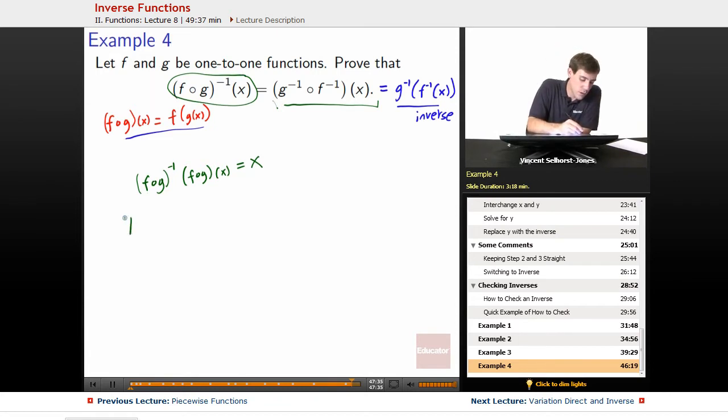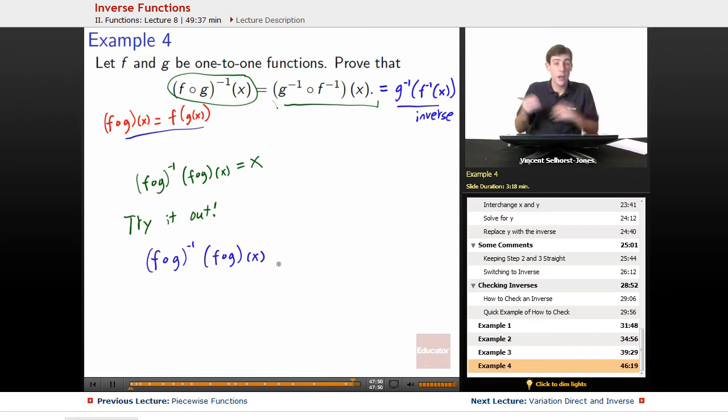So we'll set it up like this: (f∘g^(-1))(f∘g(x)). Okay, so what does that become? Well, we know that f∘g acting on x is the same thing as f(g(x)).